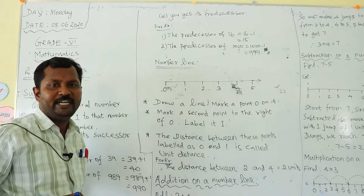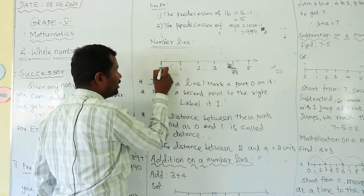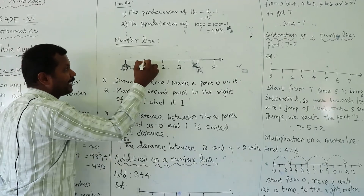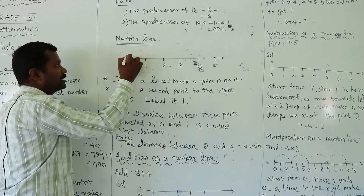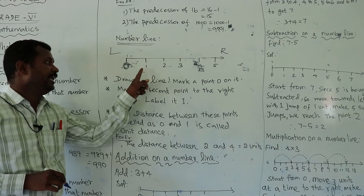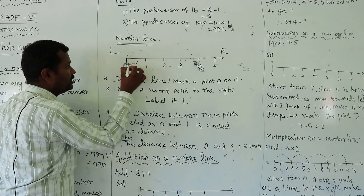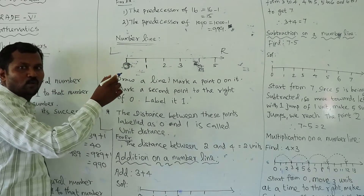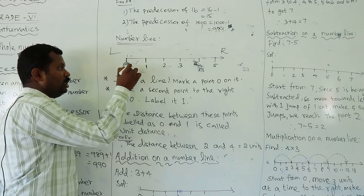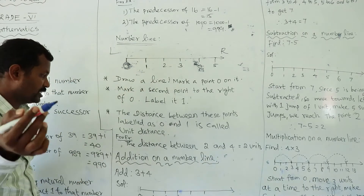Next, number line. How do we draw a number line? First, draw a line and mark a point: 0. It is not the letter O, it is the number 0. Mark a second point to the right of 0 and label it 1. The distance between 0 and 1 is called the unit distance.